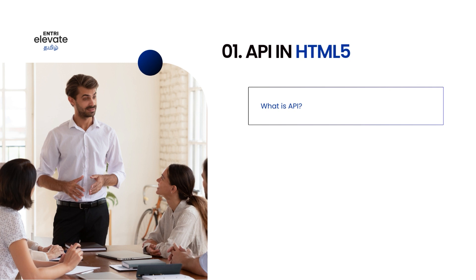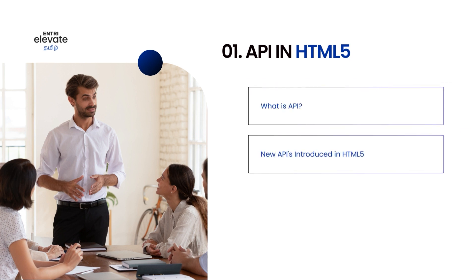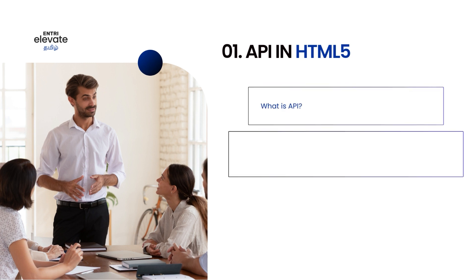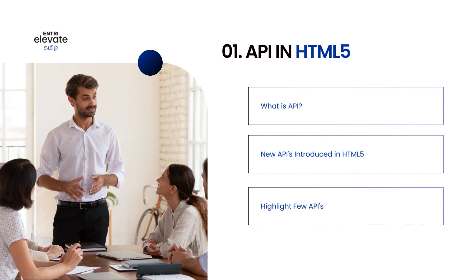So how do you present the API topic in an interview? You can ask about API in HTML. First, explain what API is about. If you do this, it will be easy to get an understanding of what new APIs HTML5 has introduced. And then you can mention a few examples or a few APIs.